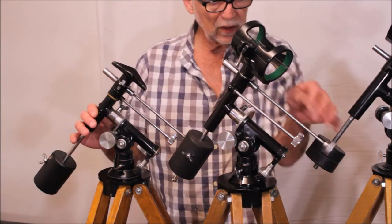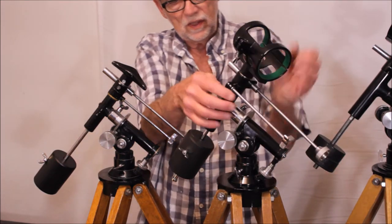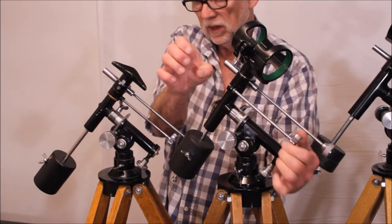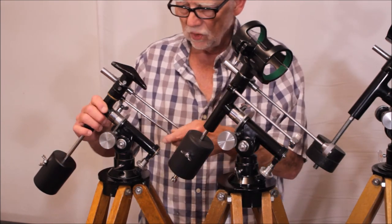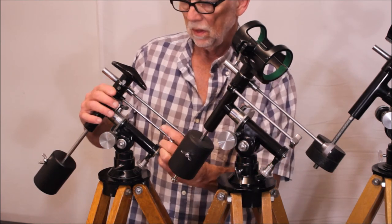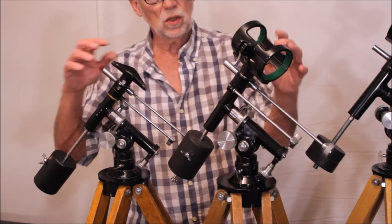The most notable difference between these two is the style of clamping for the declination lock. Now the declination lock here is a squeeze type lock, and this one is rather primitive. It's just that this bolt just grabs onto the shaft inside there. So that's one of the most notable differences.